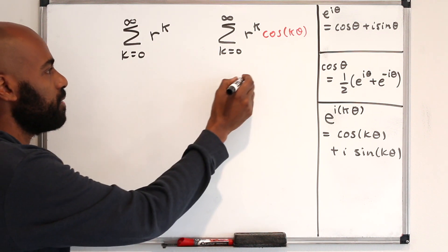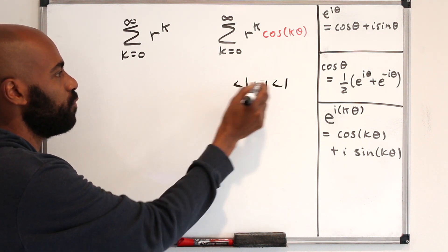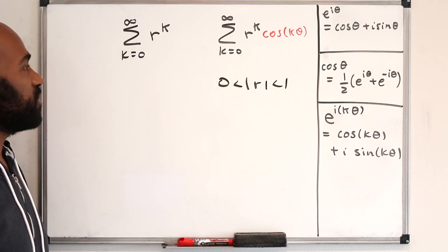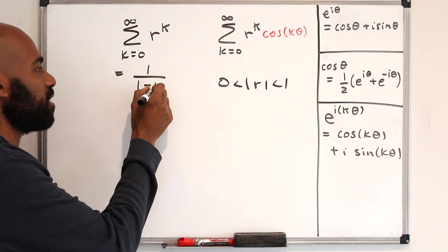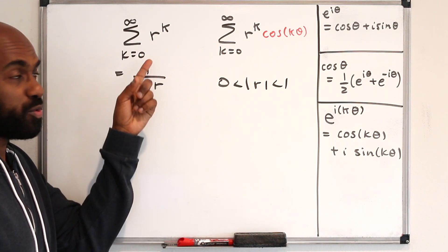Let's say you're given a real number r that is strictly less than 1 in absolute value and greater than 0. Then this sum right over here actually converges to 1 over 1 minus r as an infinite geometric series with ratio r.